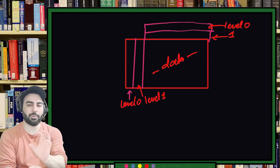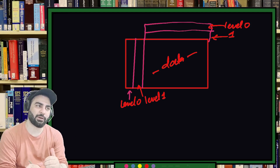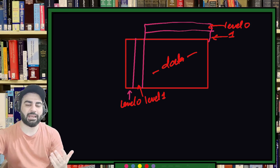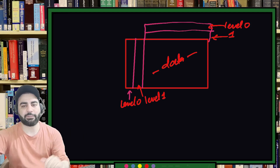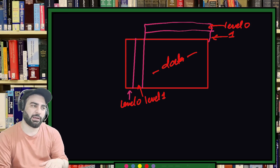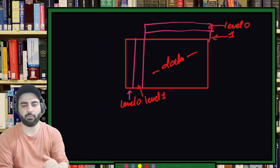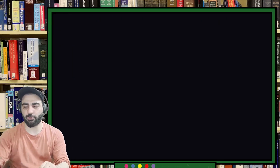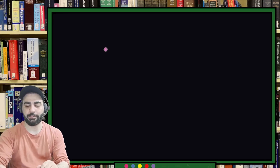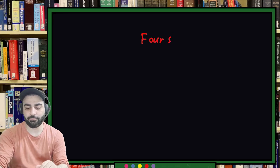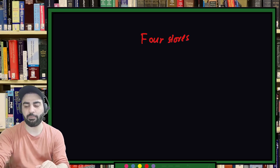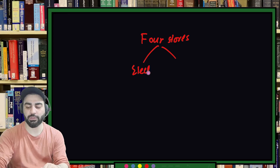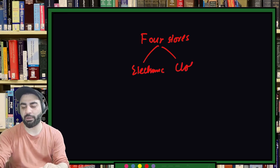Multilevel or hierarchical indexing allows you to work with more complex datasets. We gave an example using students. A similar example can be shown for different things — suppose you have different stores and you want to analyze data. Let's say you have four stores total: two electronic stores and two clothing stores, running a chain of business.